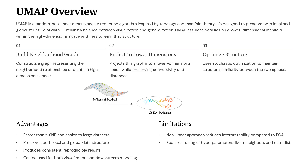UMAP is a modern non-linear dimensionality reduction algorithm inspired by topology and manifold theory. It is designed to preserve both local and global structures in the data, making it useful for both visualization and downstream machine learning tasks. UMAP works in three main steps. Step 1 — build a neighborhood graph: it creates a graph representing how points are connected in the high-dimensional space. Step 2 — project to lower dimensions: UMAP maps this graph into lower-dimensional space, usually 2D or 3D, while preserving original relationships. Step 3 — optimize structure: it uses stochastic optimization to keep the lower-dimensional structure as close as possible to the higher-dimensional structure.